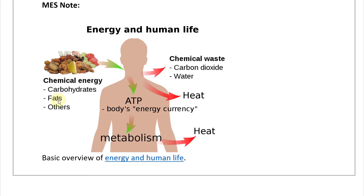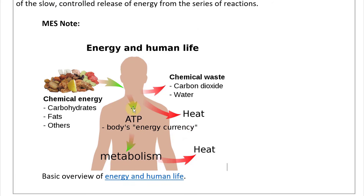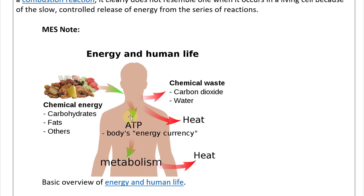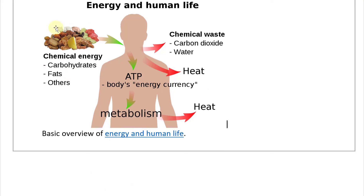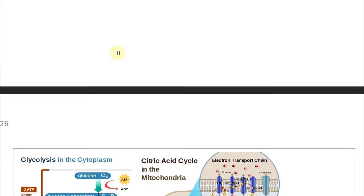You have chemical energy from carbohydrates, fats, and other food sources, which converges into ATP — the body's energy currency. Then metabolism breaks it down and uses it for energy and releases heat. In the conversion to ATP, you also release heat, as well as other chemical waste such as carbon dioxide and water, even in the initial breakdown of the larger food molecules.